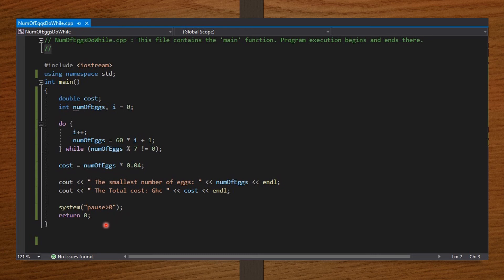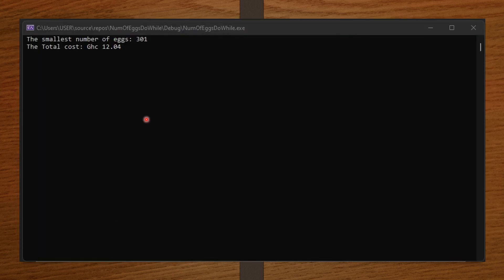So, let's actually find out what is the smallest number of eggs the boy could have had. Since we are not doing the computations ourselves and the computer is doing it for us, let's see what we are going to get. So, you see that the smallest number of eggs is going to be 301. That means the boy had 301 eggs with him. And then the total cost of it was 1204 cedis.